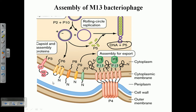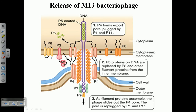The DNA with p5 proteins is taken inside the capsule. The arrangement occurs with p8 proteins at a 20-degree angle. Then other terminal proteins like p9, p7, and on the other terminal p6 and other proteins are added. The DNA is inside and covered with additional rounds of gp8. Finally, when the covering of the DNA inside the capsid is complete, the p5 proteins on the DNA are replaced by p8 and other filamentous proteins in the inner membrane.